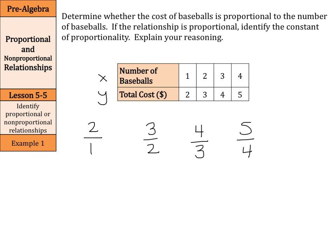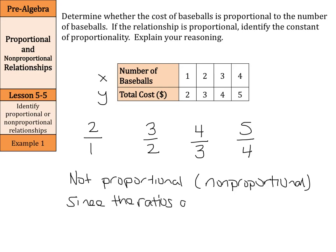When I look here, 2 over 1, 3 over 2, 4 over 3, and 5 over 4, these are not equal ratios. So, our answer is going to be not proportional or non-proportional since the ratios are not equal.